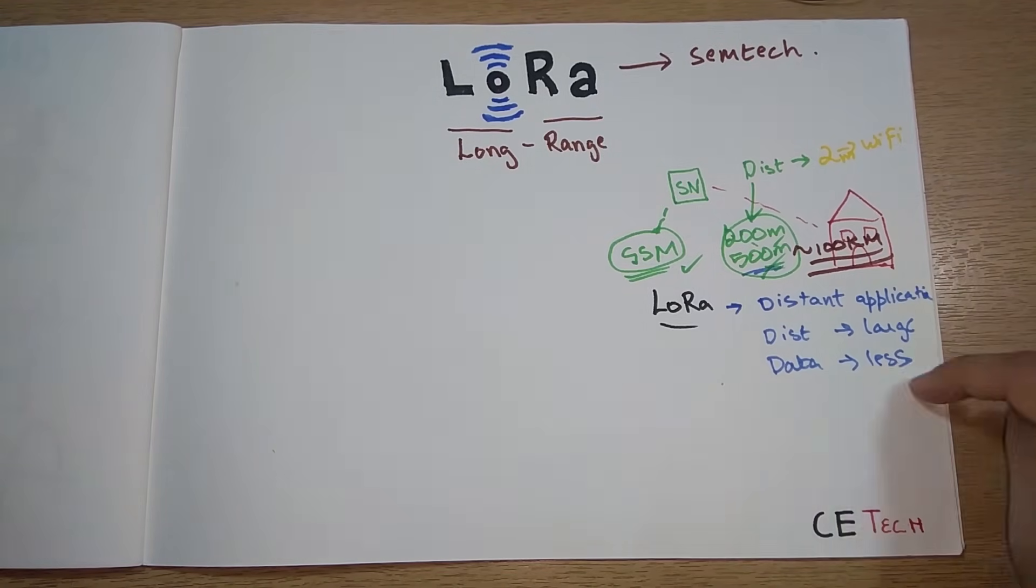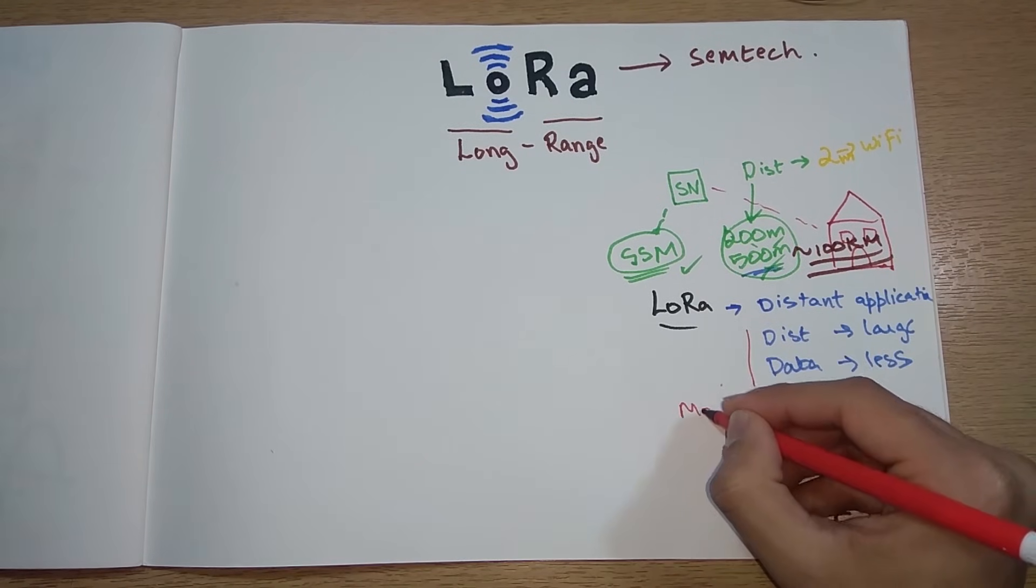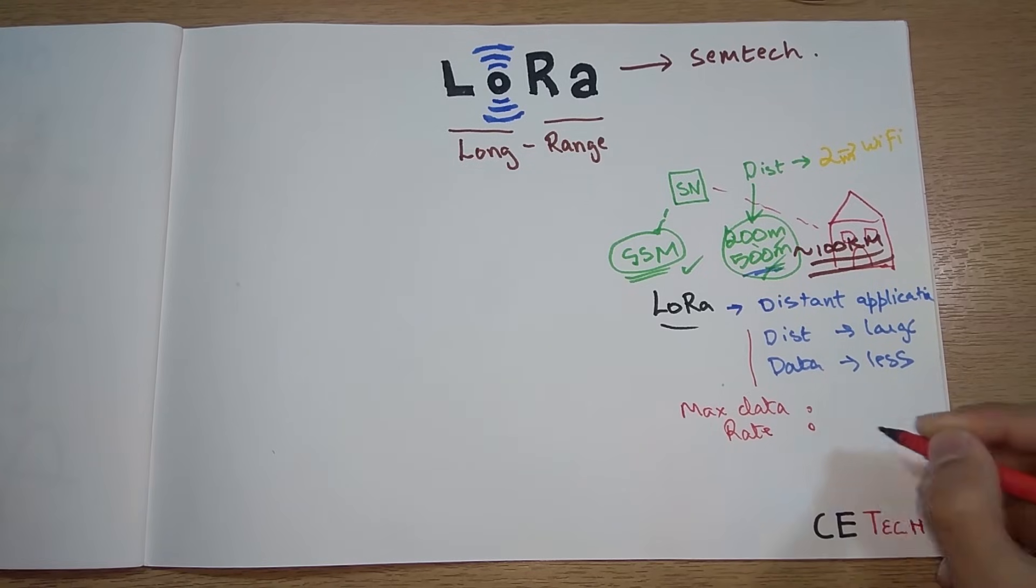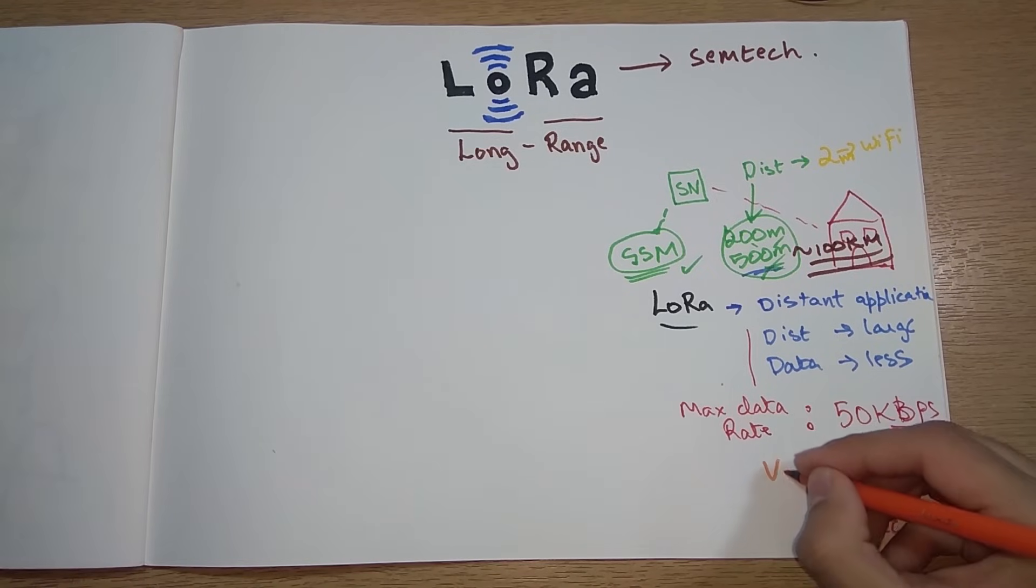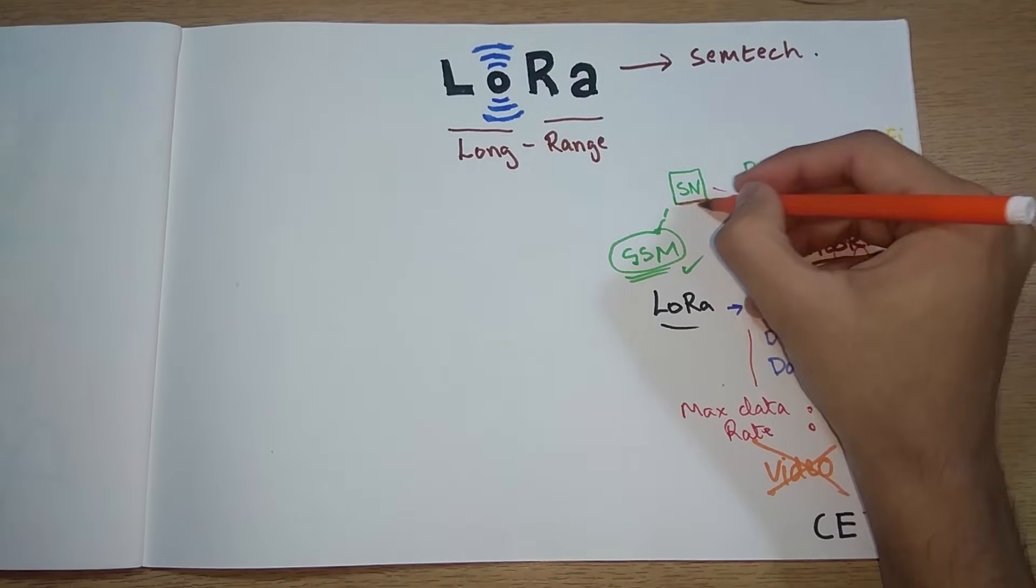But the disadvantage is that you need to use less data, you need to send less data at one time. Talking about data, the maximum data rate for LoRa is 50 kbps.